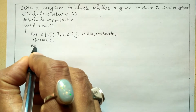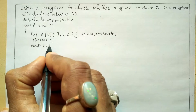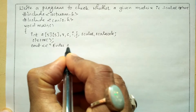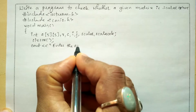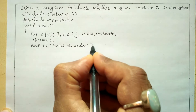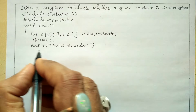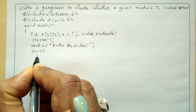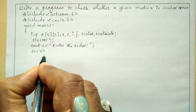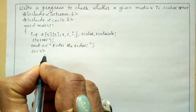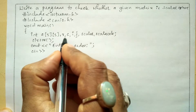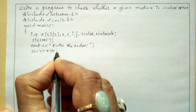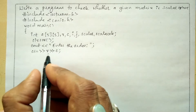Now we will ask the user to enter the order. So in double quotation marks I am going to write "Enter the order" and put a semicolon. We are going to receive the response from the user through the keyboard using cin with the stream extraction operator, taking row and column, then put a semicolon.